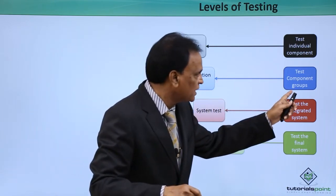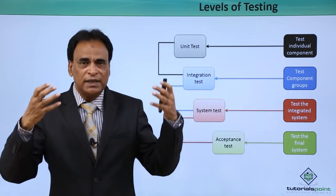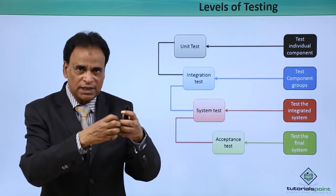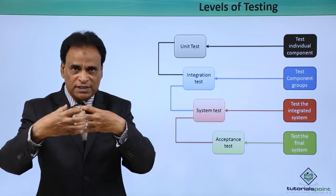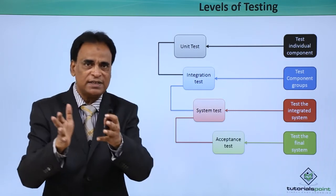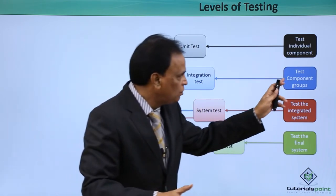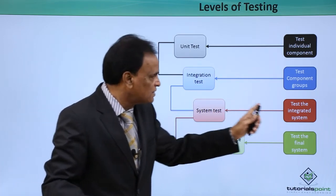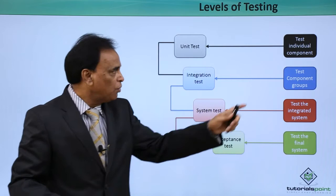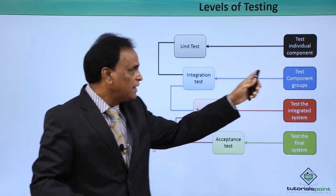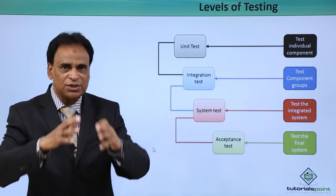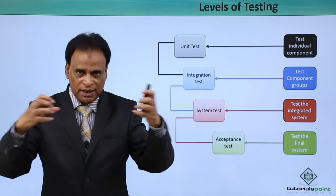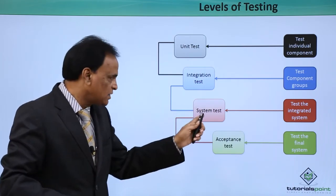Then happens the integration test, which tests component groups. Integration happens when the different elements of the user interface are integrated together, the different components of the functionality are integrated together, and the database is integrated together. When integration happens, you group the components, put them together, and test them. Then finally there is the system test — the integrated system is tested as a complete system wherein the user interface, business logic, functionality, and database are all integrated together.